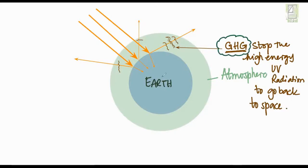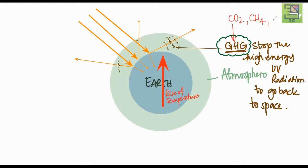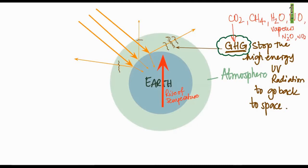The increase in earth's temperature is the outcome of increasing greenhouse gases in the atmosphere. These greenhouse gases include carbon dioxide (CO₂), methane (CH₄), water vapor, and oxides of nitrogen — NO, N₂O, and NO₂. All these oxides of nitrogen play a very important role as greenhouse gases, contributing to what we call the greenhouse effect.